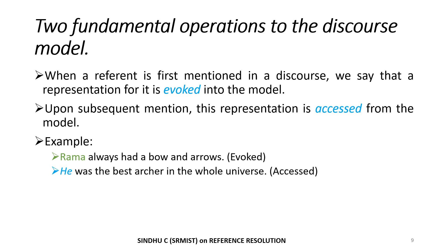There are two fundamental operations of the discourse model. The first one is evoking and the second one is accessing. When a referent is first mentioned in a discourse, a representation for it is evoked into the model. Upon subsequent mention, this representation is accessed from the model. In our example — Rama always had a bow and arrows — this is the first time we use the word Rama, so it is called evoking. The second time we mention him using the word he — He was the best archer in the whole universe — we are accessing it.